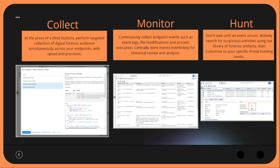Velociraptor will allow us to collect, monitor, and hunt across our endpoints at the click of a few buttons — very similar to the capabilities that GRR provides. Velociraptor gives us the ability to remotely traverse our endpoints' file systems, perform targeted collection of digital forensic evidence simultaneously across all endpoints, monitor event logs, file modifications, process executions, and take advantage of features not easily integrated within Wazuh. We also have the ability to hunt across our endpoints.